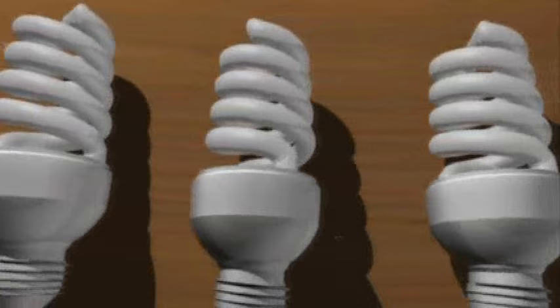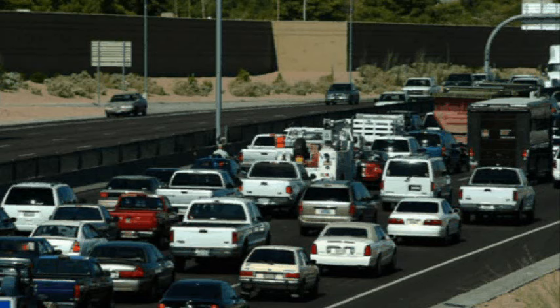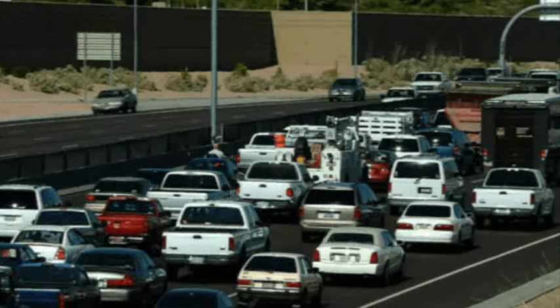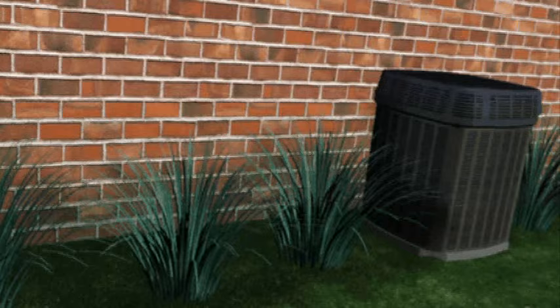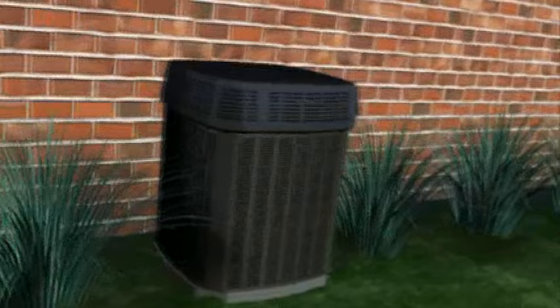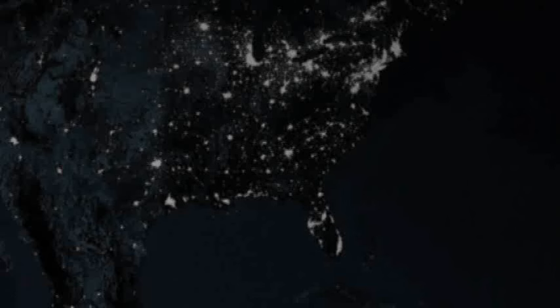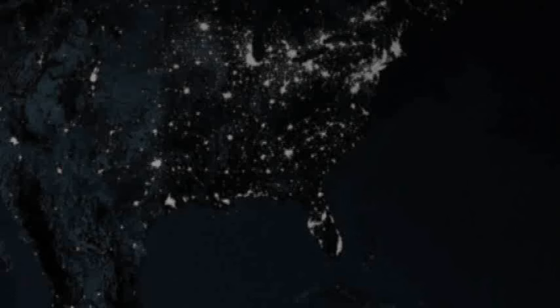If every family in the U.S. replaced one incandescent bulb with a compact fluorescent bulb, it would eliminate 90 billion pounds of greenhouse gases, equivalent to taking 7.5 million cars off the roads. Using efficient cooling and heating systems can save 2,000 pounds of carbon dioxide per person per year.